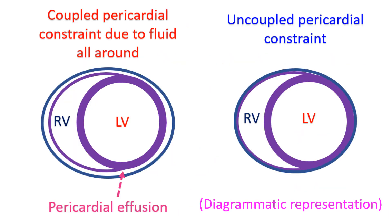In coupled constraint of pericardial tamponade, uniform liquid pressure is exerted over the entire surface of the heart. This couples changes in volume of one chamber to changes in the volume of all others. In contrast, uncoupled pericardial constraint in constrictive pericarditis is exerted by regional surface pressure, which independently restricts changes in the volume of each chamber.